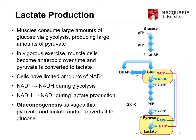Muscles can consume a large amount of glucose via glycolysis and in doing so they produce a large amount of pyruvate. Glycolysis operates under anaerobic conditions, meaning that we do not require oxygen for glycolysis to occur. It's a series of reactions that ultimately gets from glucose down to pyruvate. If oxygen is present, that pyruvate will be converted to acetyl-CoA and enter the Krebs cycle and undergo oxidative phosphorylation, which produces the most amount of ATP.